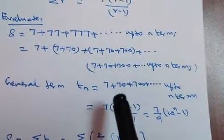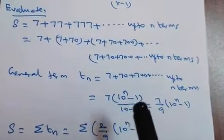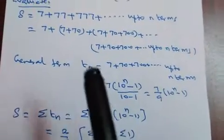A into r power n minus 1 by r minus 1. A equal to 7. R equal to 10. Power n minus 1 by 10 minus 1. What is 10 minus 1? 9. Very good. 7 by 9 into 10 power n minus 1. This is general term tn.